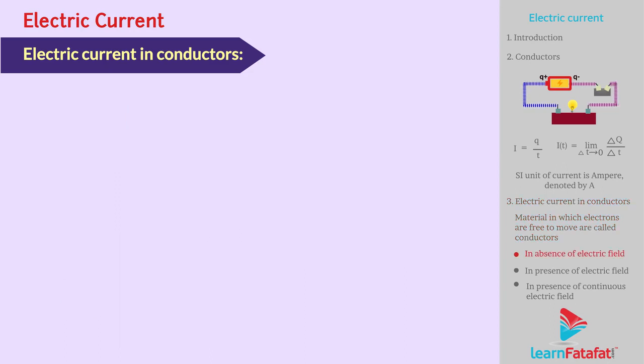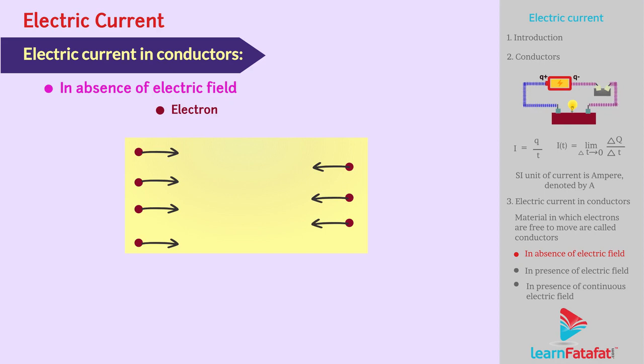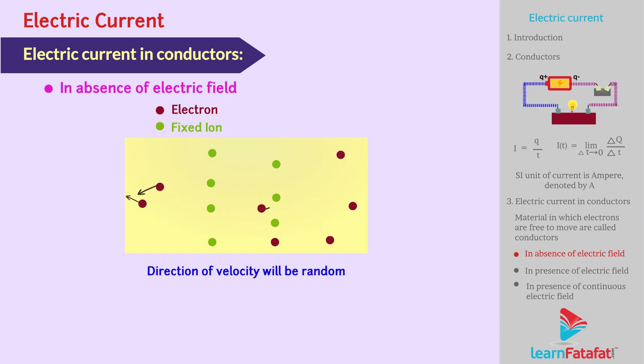Let us discuss different cases for solid conductors. In absence of electric field, electrons will move in the conductor due to thermal motion. During motion, they collide with the fixed ions. The speed of electrons after collision will be same as before collision, but the direction of velocity will be random.